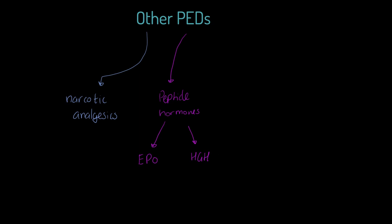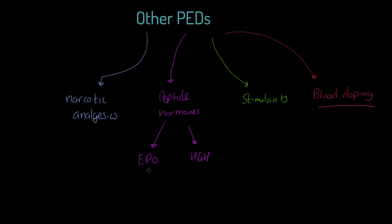Both EPO and HGH have been popular in recent years, and we'll look at those in detail. We're also going to look at stimulants — things like caffeine and amphetamine. Finally, although it's not a drug but a method, we'll look at blood doping. One thing to note immediately is that blood doping and EPO have a lot of overlap in the output they achieve, though not in their methodology.